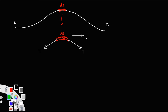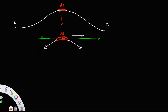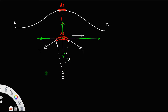Let us draw an axis such that its origin is at the center of the section ds. This is the x-axis and this is the y-axis. Clearly this ds is an arc of a circle. Let O be the center of the circle and the radius of the circle be r.